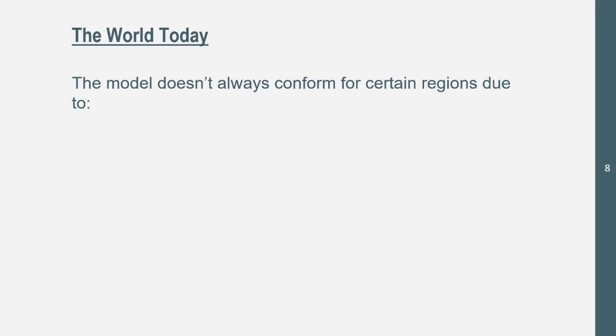In the world today, the Von Tunen model doesn't always conform for certain regions due to technological advancements. We see genetic modifications, we see technology that makes things easier or harder, changes things in our crops and products.